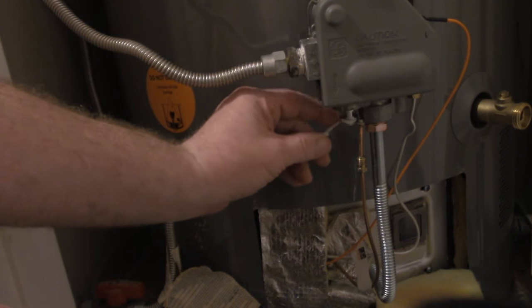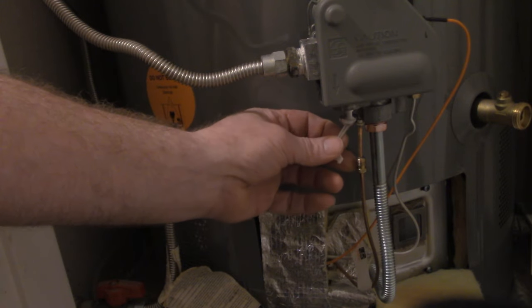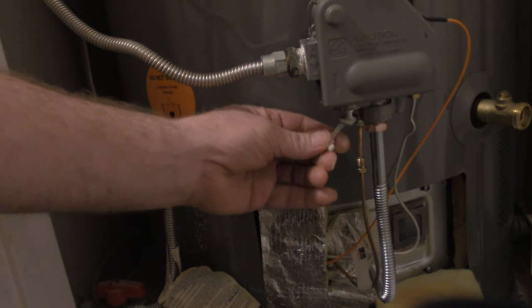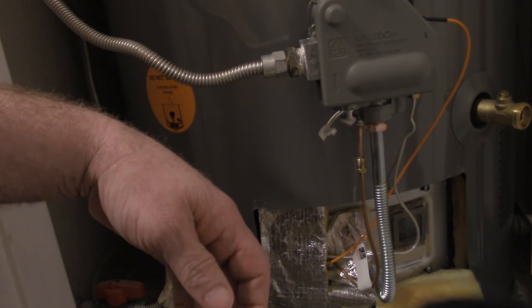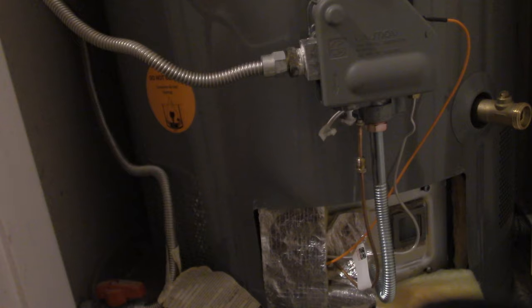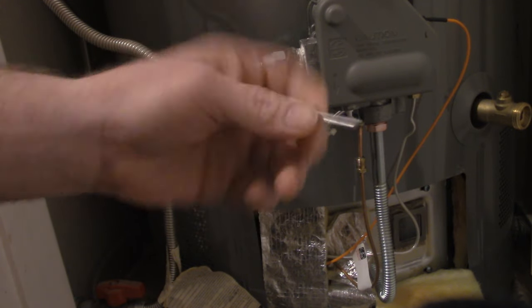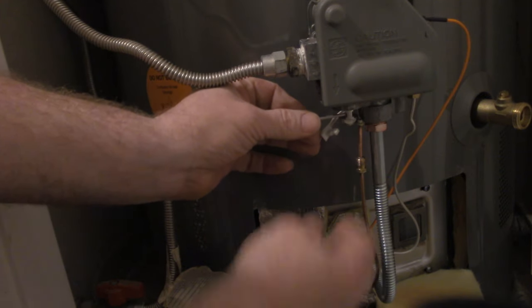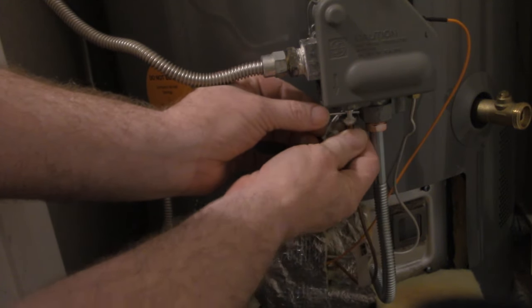So a couple options that you have there to troubleshoot this, you can actually cut these wires and twist them, strip them off and tie them together and put that back in there. Another thing that you can do, and this is what I've done, is you can just find a small nail, this happens to be an aluminum pop rivet, and hold that in there and then reconnect your thermocouple.